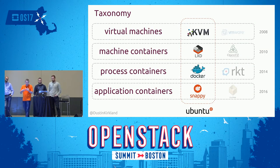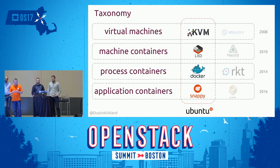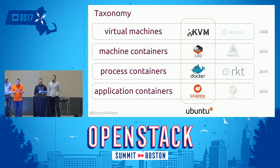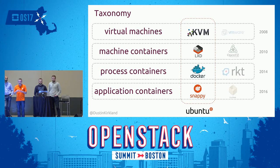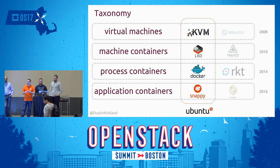There are different types of containers: virtual machines based on KVM with networking implications; machine containers like LexD or OpenVZ, which look and behave like VMs but use container primitives; process containers like Docker and Rocket; and application containers for IoT or embedded spaces like Snappy and Flatpak. We'll primarily be talking about process containers — Docker containers — and how to network Kubernetes and OpenStack environments together.